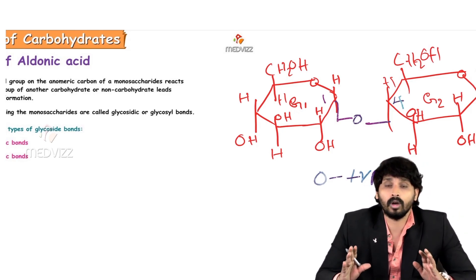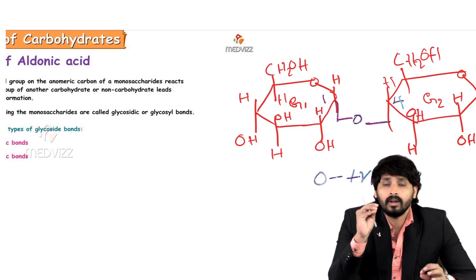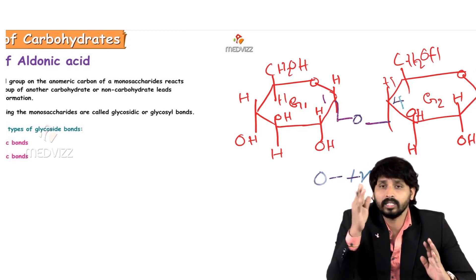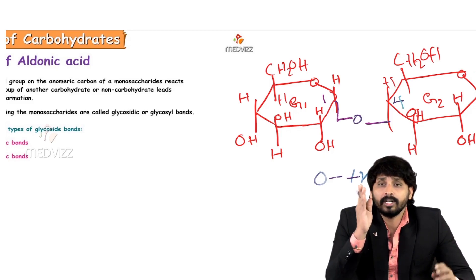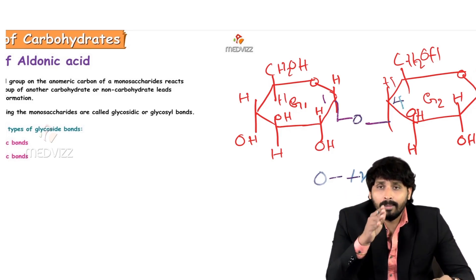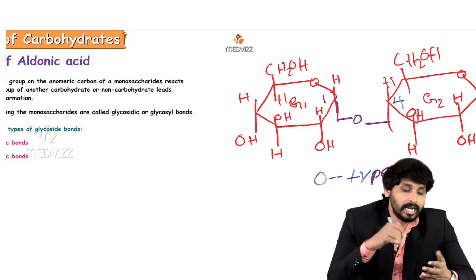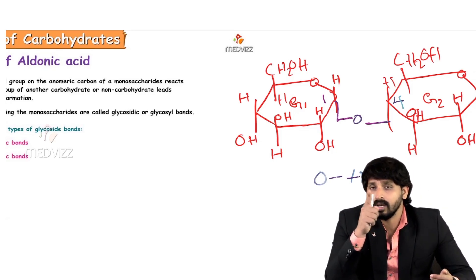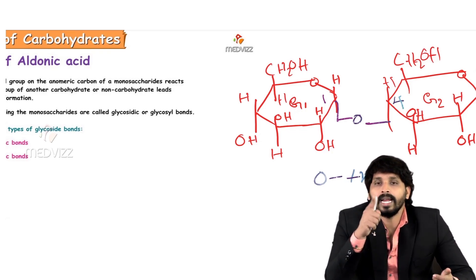There is another type of glycosidic bond — the N-type glycosidic bond. When a carbohydrate attaches to a nitrogen-containing substance other than a carbohydrate, that is known as an N-type glycosidic bond. This type of bond can be seen in nucleotide formation. A nucleotide is the building block of nucleic acids — that is, DNA and RNA. In that structure, ribose is attached to adenine. A nucleotide consists of a sugar, a nitrogen base, and a phosphate group. Here, adenine serves as the nitrogen base, the sugar is ribose, and the bond connecting sugar to adenine is an N-type glycosidic bond.